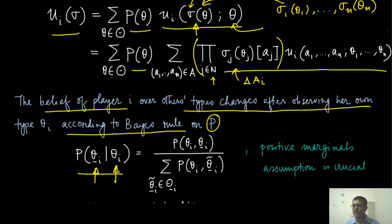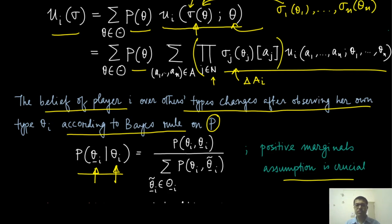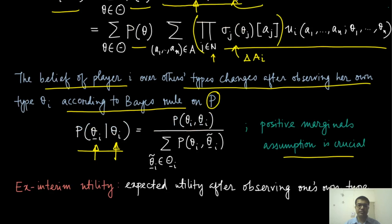The positive marginals assumption is crucial because if there are certain types for which the marginal probability is zero, then you cannot define the conditional probabilities — they are undefined. Therefore, to define these conditional probabilities, we need the marginals to be positive.